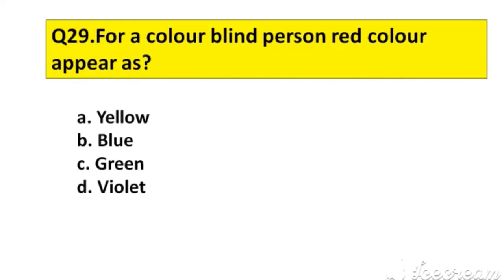Question number 29. For a colorblind person, red color appears as: A. Yellow, B. Blue, C. Green, D. Violet. The right answer is option C, Green.